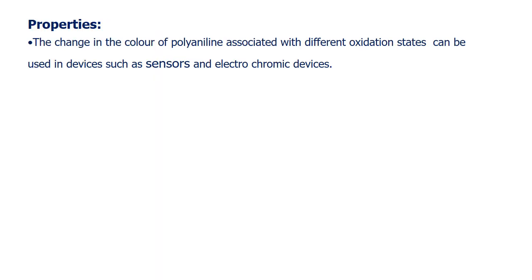Properties: the change in color of polyaniline is associated with its oxidation state. For different oxidation states, it shows different colors. This property can be used in sensors and electrochromic devices where we sense the color change.